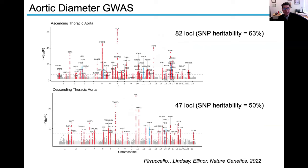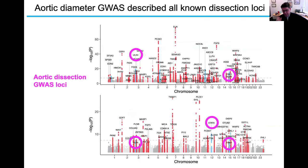We were able to identify many new loci associated with thoracic aortic diameter, with many more for the ascending aortic diameter, which makes sense — it's really the anatomy with the highest heritability. Reassuringly, from a GWAS that was just measuring aortic diameter, we were actually able to identify all the known aortic dissection GWAS loci. So when you do what's essentially a biomarker GWAS, you want to be sure it's actually following the clinical outcome, and it's nice to see the known aortic dissection GWAS loci were also identified by this technique.